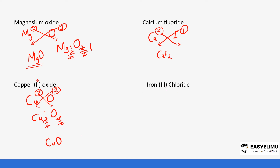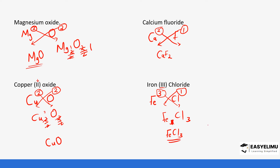One more example: iron(III) chloride, also a transitional element forming a compound with chlorine. The symbol for iron is Fe and the valency is three - we get the valency from what is in the bracket. Chlorine's valency is one. Crisscross the charges: iron gets a one and chlorine gets a three. We cannot cancel one and three, so they remain. We don't write one, so the formula becomes FeCl3.